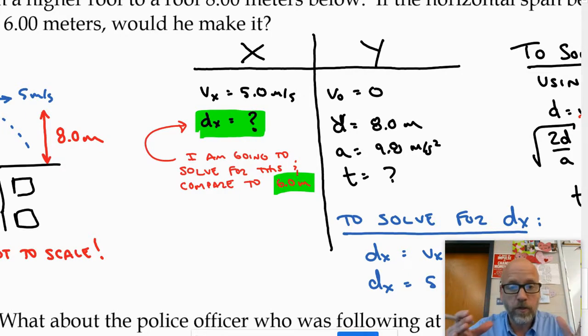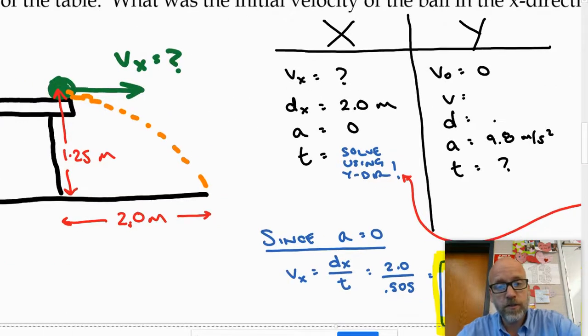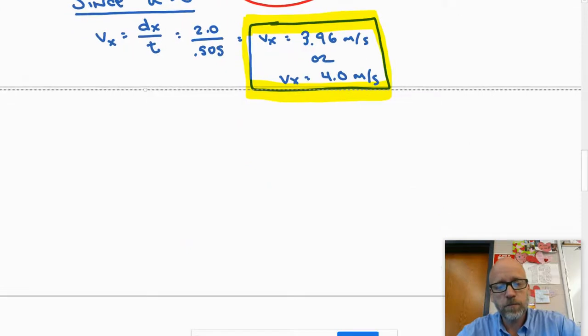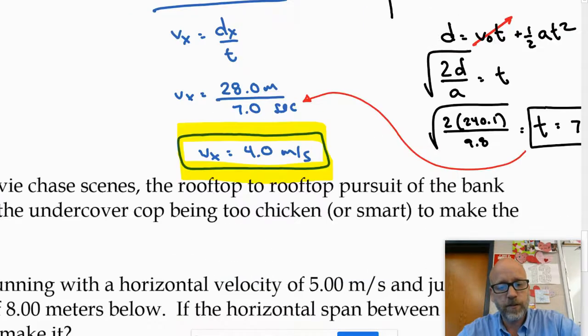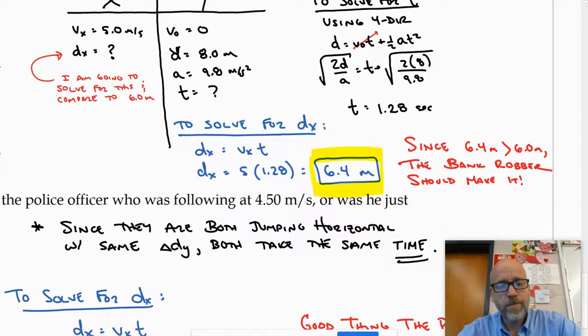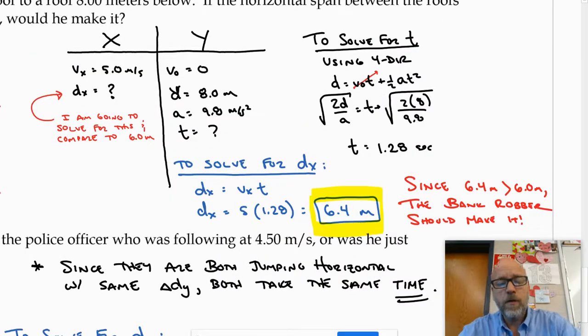Instead, I'm going to solve what would the horizontal displacement be, then compare it to 6 meters. If it's greater, then he makes it; if it's less, then he doesn't. So I went and did the math and did not include the 6 meters there. I found that the person would be in the air for 1.28 seconds, meaning that at 5 meters per second they would travel 6.4 meters.